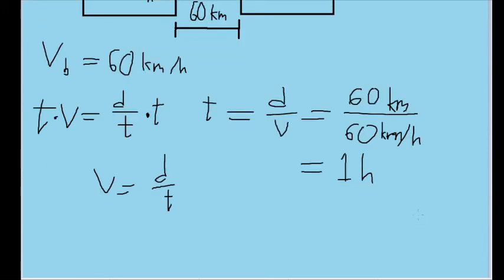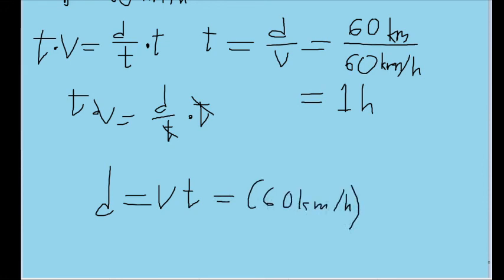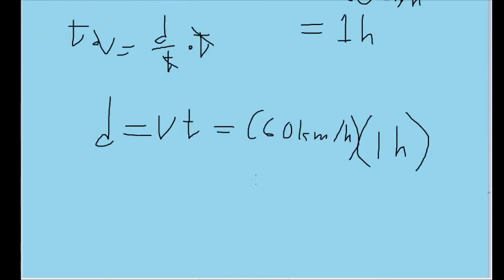We know that this is the same amount of time that it will take for the bird to stop flying. Once again, from the average speed formula, multiplying both sides by T so that it cancels out on this side, we can see that a distance is equal to the speed multiplied by the time. We know that the bird's speed is 60 kilometers per hour, and we now know that the bird is in flight for one hour. 60 times one is just 60, so the bird travels a total distance of 60 kilometers.